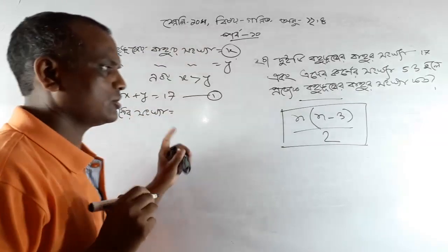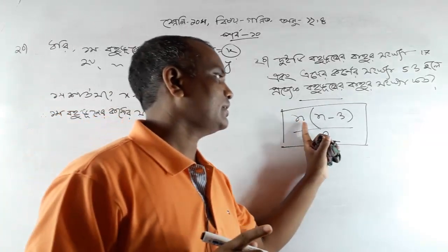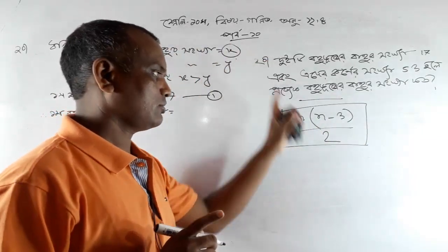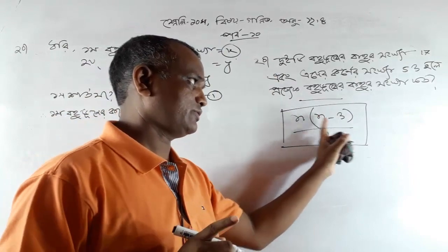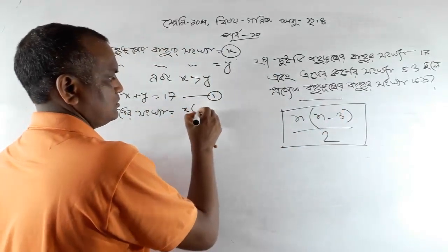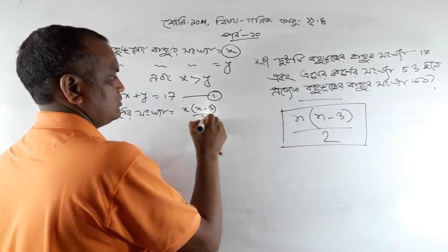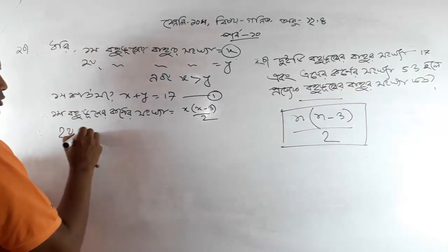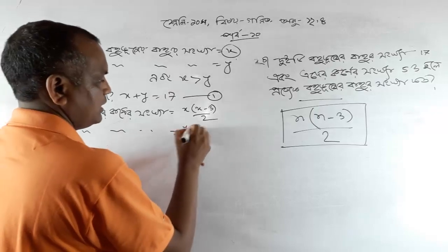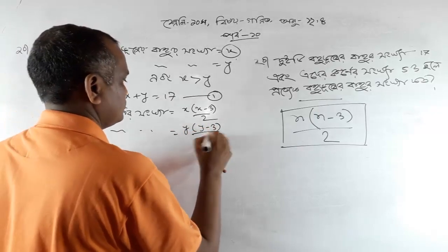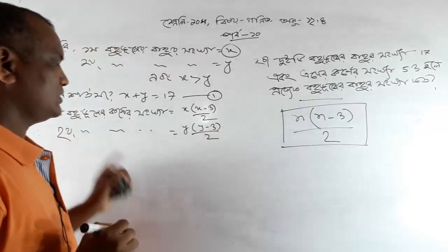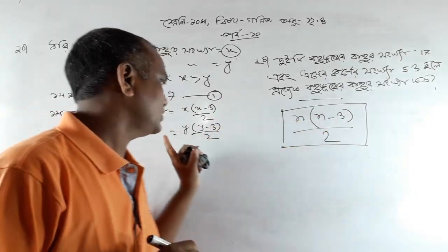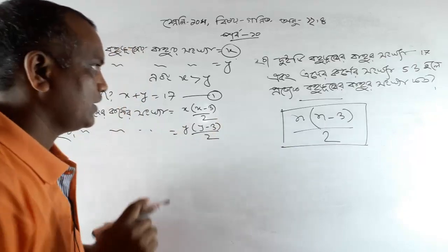The x into x-2, and all the same is x — x into x into x-2. And then you see, in the same way, y into y minus 3 by 2. This is y into y minus 3 by 2.